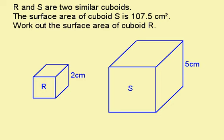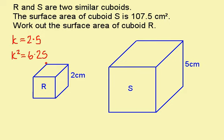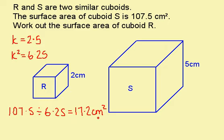Here's another question for you to try. Press pause and have a go at it. When you're ready for the answer, press play. The first thing I need to do is find my scale factor k. This is 5 over 2, which is 2.5. Because I'm asked to work out the surface area, I need to find the ratio of the areas, which is k squared. 2.5 squared is 6.25. I know that the surface area of this cuboid is 107.5, so I'm going to divide that by 6.25 to find the surface area of this cuboid. This equals 17.2.